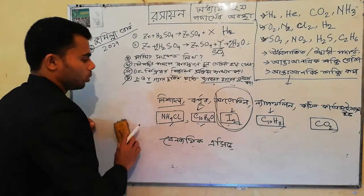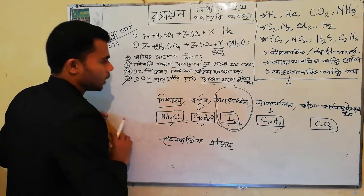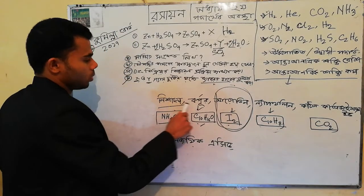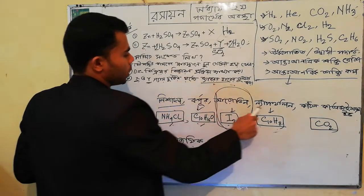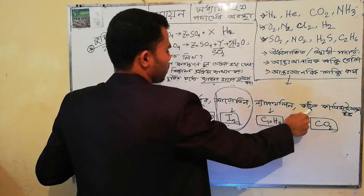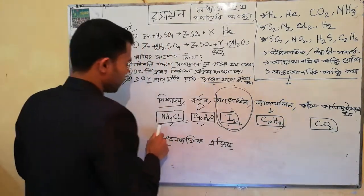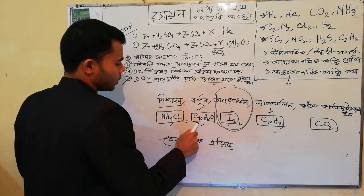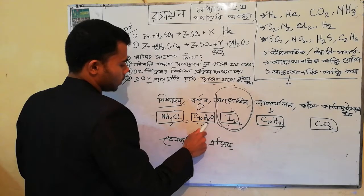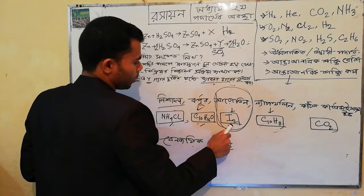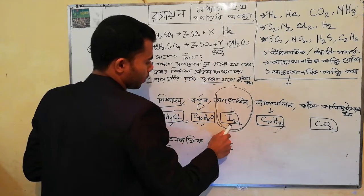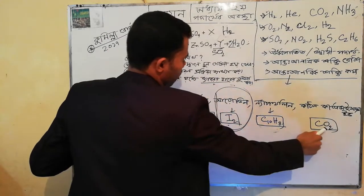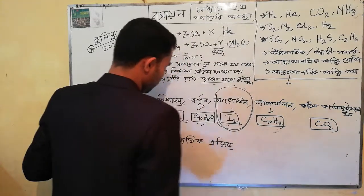So this is the main thing. This is the carbon dioxide carbon dioxide. What is carbon dioxide? Ns4Cl, CthnH6O, I2, CthnH6O, CO2.